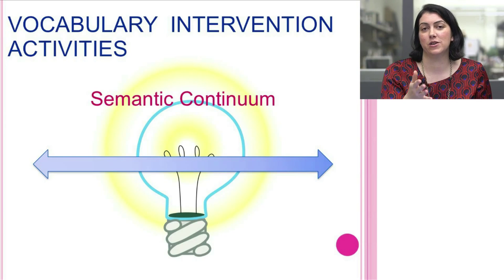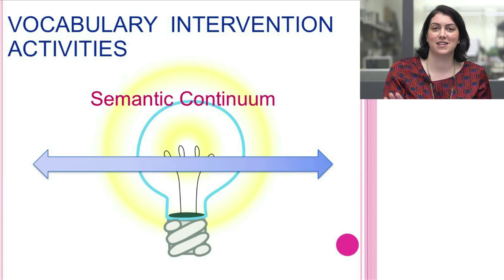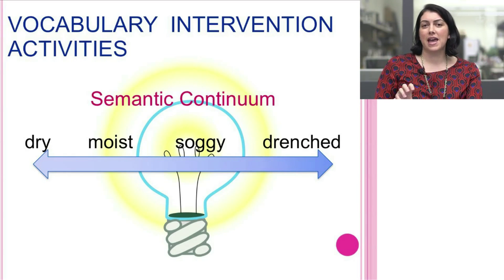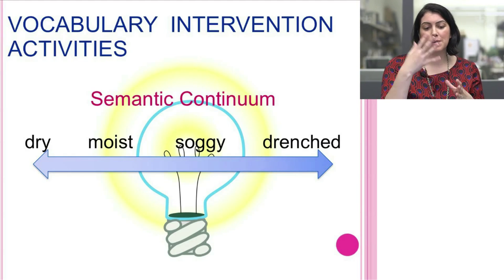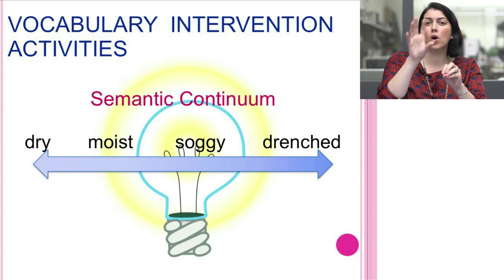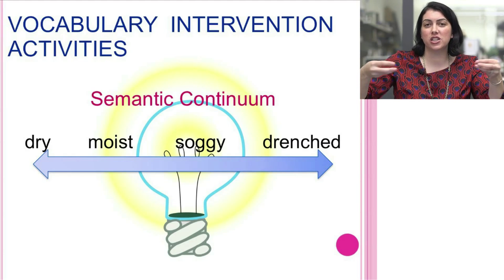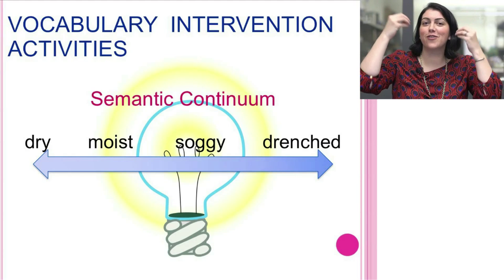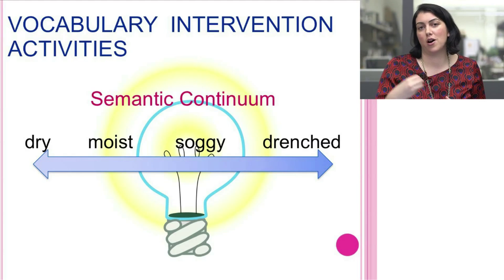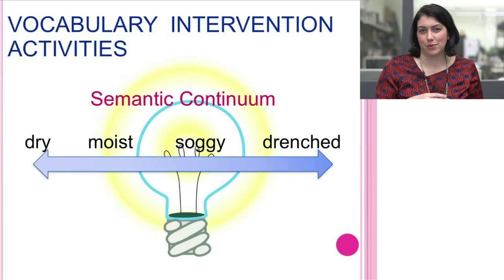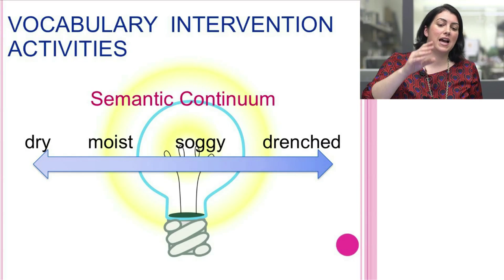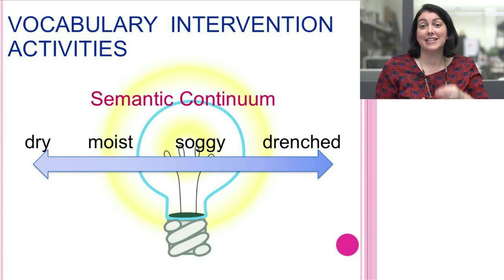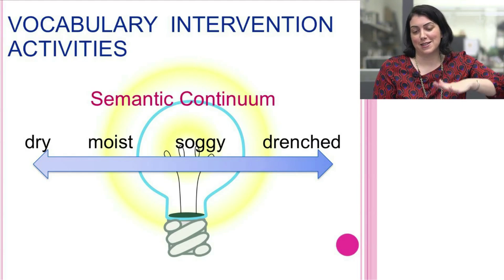I also love using a semantic continuum. This activity can be used with varying ages — you just need to make sure the words are appropriate for your students. It helps students organize words that may have related meanings but at different degrees. For example, going from 'dry' to 'drenched' and figuring out what other words to add to see how they relate. When we teach these words together and help students make those connections, they're organizing those file folders in their brain, making it easier to draw upon those words because they learned them in context of related words. For younger students, you can flip this to a thermometer visual, where intensity increases as you go up.